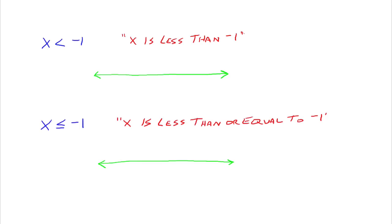Let's look at two more: x is less than negative 1. On the number line we mark negative 1, and since we want all numbers less than negative 1, those numbers are to the left, so we shade in that direction — don't forget the arrow on the end. Since negative 1 is not included, we use a parenthesis. Then for x is less than or equal to negative 1, negative 1 is included, so we use a bracket at negative 1 and shade off to the left. That's the same as having a closed circle at negative 1.